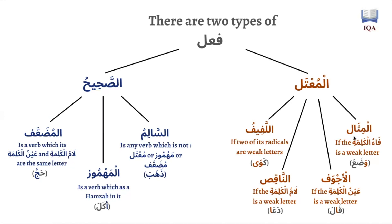Here we're going to be speaking about the verb that is mithal, which is a subcategory of the verb that is mu'atal — it is a verb that has a waw or a ya as its fa-kalima. So if the fa-kalima is a weak letter, the verb is going to be called mithal, and that's what we're going to be covering right now.